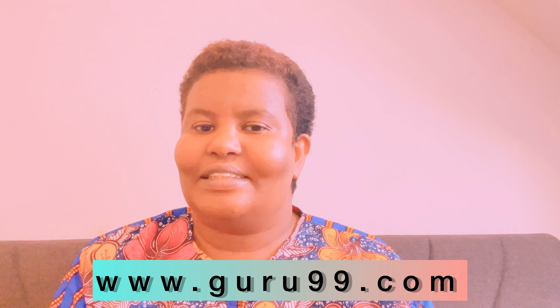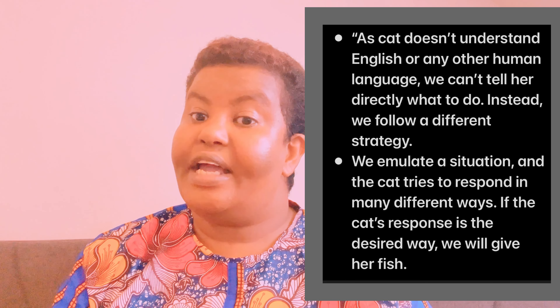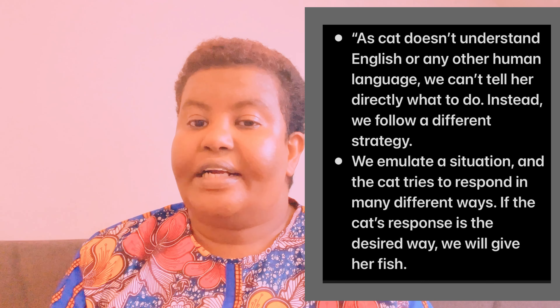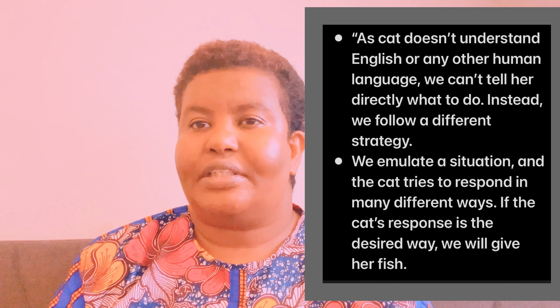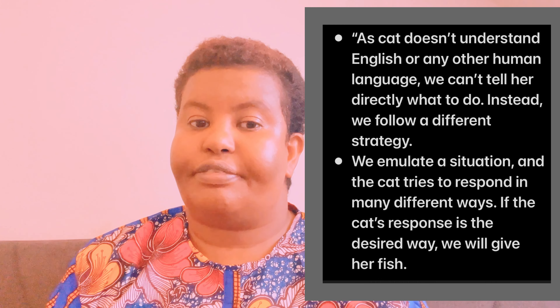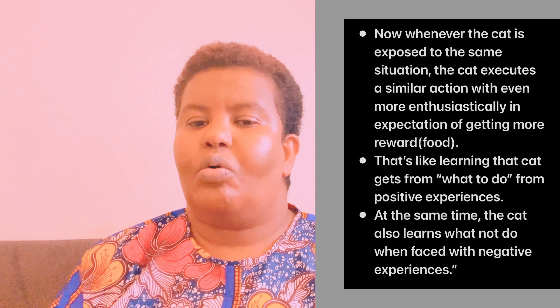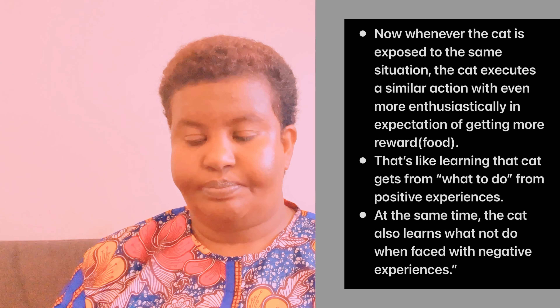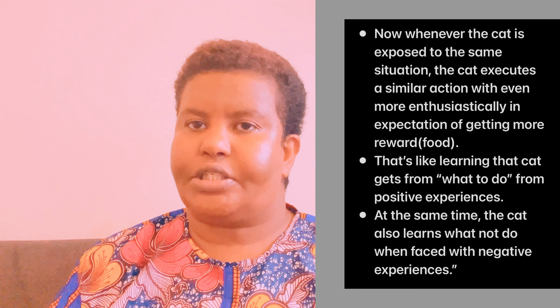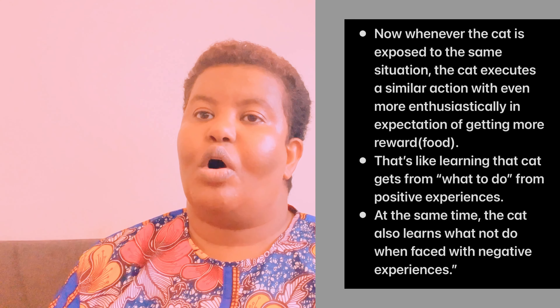Guru99 has this scenario of teaching new tricks to a cat. As a cat doesn't understand English or any other human language, we can't tell her directly what to do. Instead, we follow a different strategy. We emulate a situation and the cat tries to respond in many different ways. If the cat's response is the desired way, we will give her a fish. Whenever the cat is exposed to the same situation, the cat executes a similar action with even more enthusiasm in expectation of getting more reward — in this case, food. That's the learning that the cat gets from positive experiences.